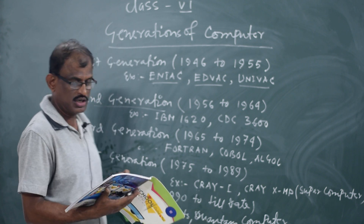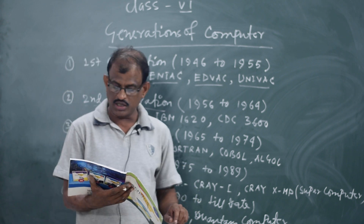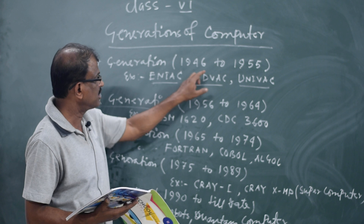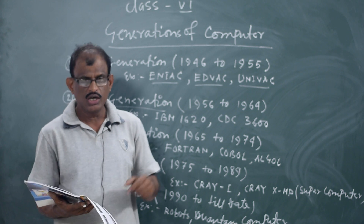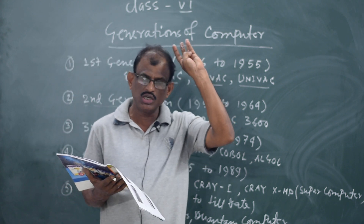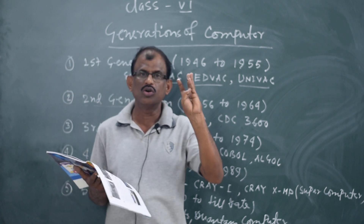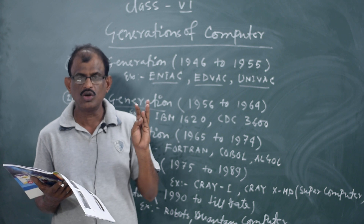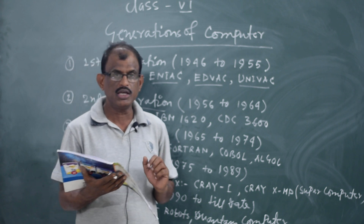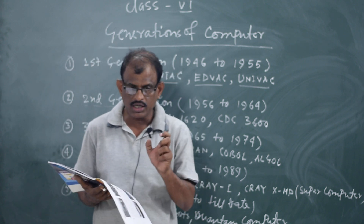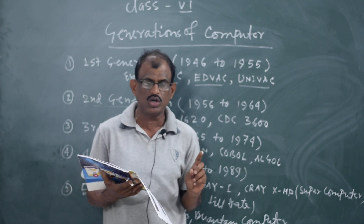Fourth generation of computers: 1975 to 1989. First generation used vacuum tubes, second generation used transistors, third generation used IC, and fourth generation used VLSI — Very Large Scale Integrated Circuit. Many ICs together are known as VLSI.